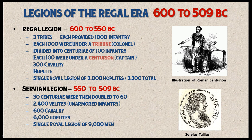With 6,000 hoplites, along with 2,400 velites and 600 cavalry, that brings a total of 9,000 men in the single royal legion. These were all under the command of the Roman king.